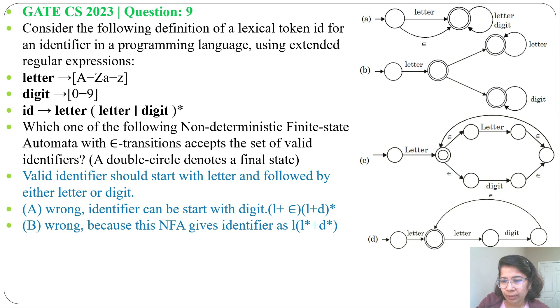So this is wrong. Next option C. Regular expression will be letter, then letter plus digit whole Kleene closure. So this is the regular expression for identifier. So option C is correct.